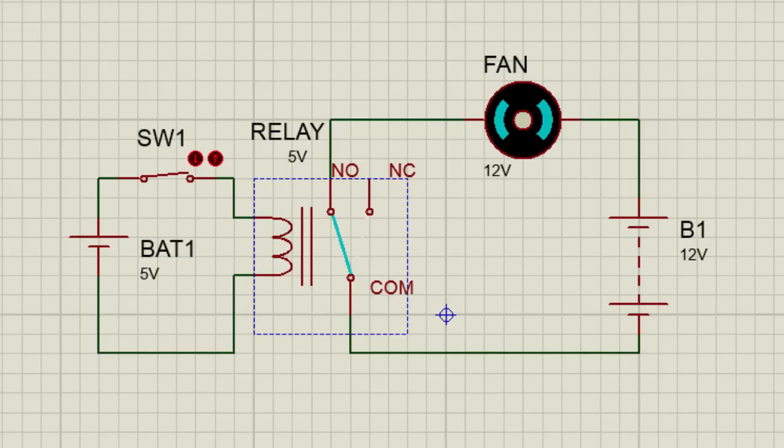Generally, a single pole double throw relay has 5 terminals. Two terminals are used to energize the coil of the relay, and the other three are the controlled switch to switch a control device which is connected to the relay. The three terminals are the common terminal, the normally open, and the normally closed terminal.